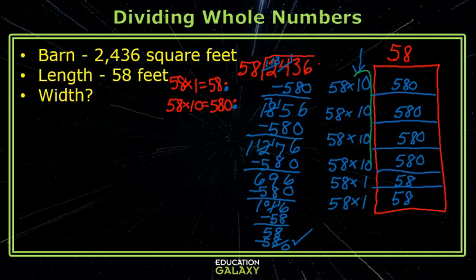The last step is to add all of your partial quotients to get the final answer. So I have 10, 20, 30, 40, 41, 42.